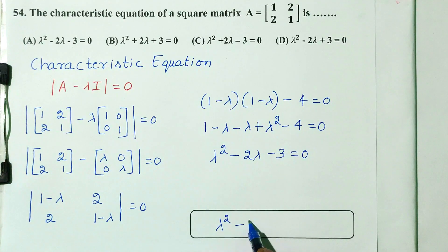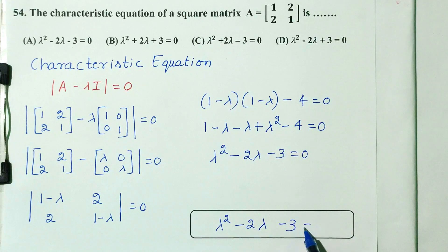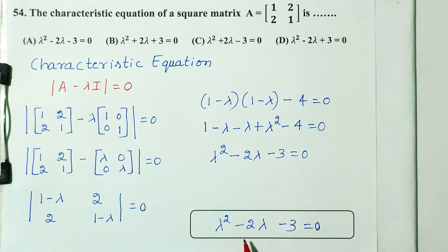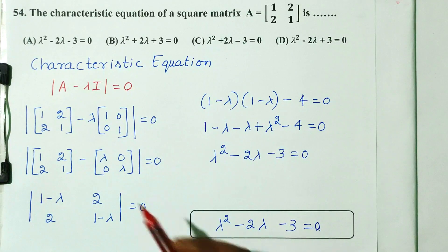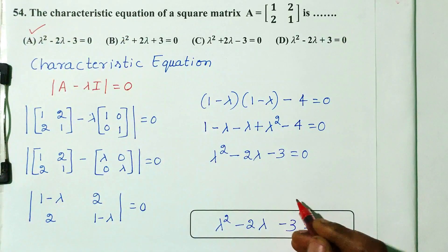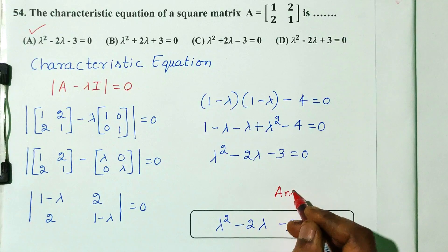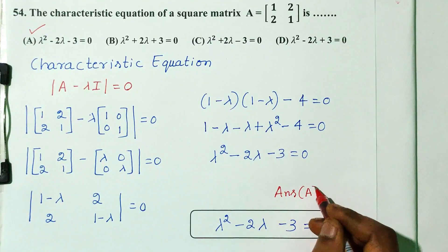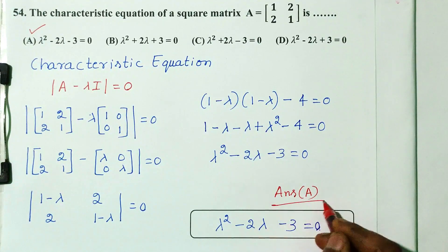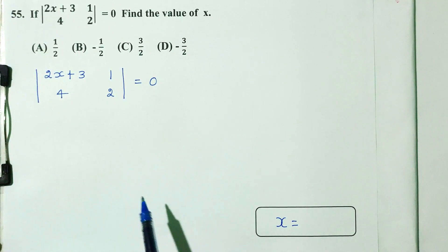So the characteristic equation is lambda squared minus 2 lambda minus 3 is equal to 0. That is option A, which is the right answer.